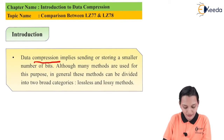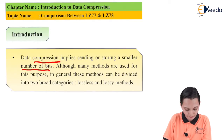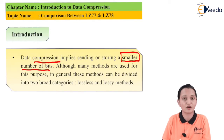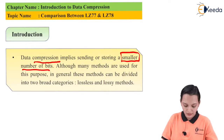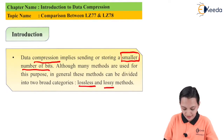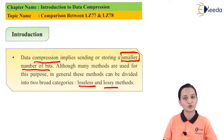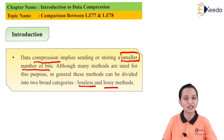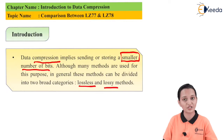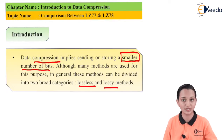Compression implies sending or storing a smaller number of bits — we have to highlight the word 'smaller'. Because anyone who tries to transmit data will surely want the minimum number of losses during transmission. Although many methods are used for this purpose, in general these methods are divided into lossy and lossless methods. These are things we have already seen in our last lecture, and depending on these methods, there are few kinds of algorithms present for lossless and lossy compression.